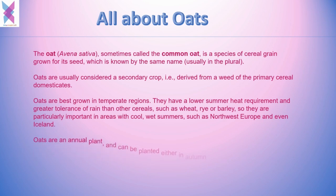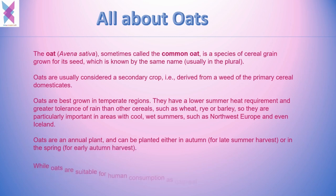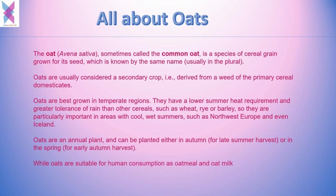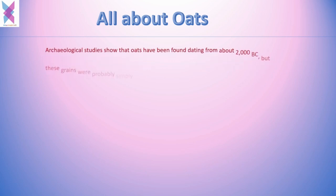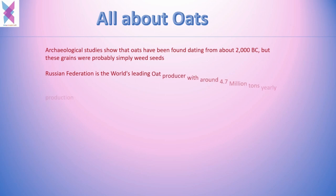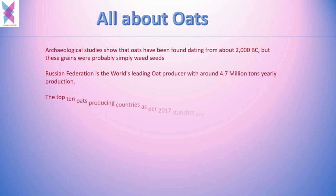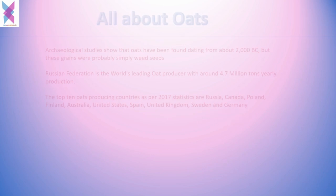Oats are an annual plant and can be planted either in autumn for a late summer harvest or in the spring for an early autumn harvest. Oats are suitable for human consumption as oatmeal or oat milk. Archaeological studies show oats dating from 2000 BC. Russia is the world's leading oat producer with around 4.7 million tons yearly. The top 10 oat-producing countries as per 2017 statistics are Russia, Canada, Poland, Finland, Australia, United States, Spain, United Kingdom, Sweden, and Germany.